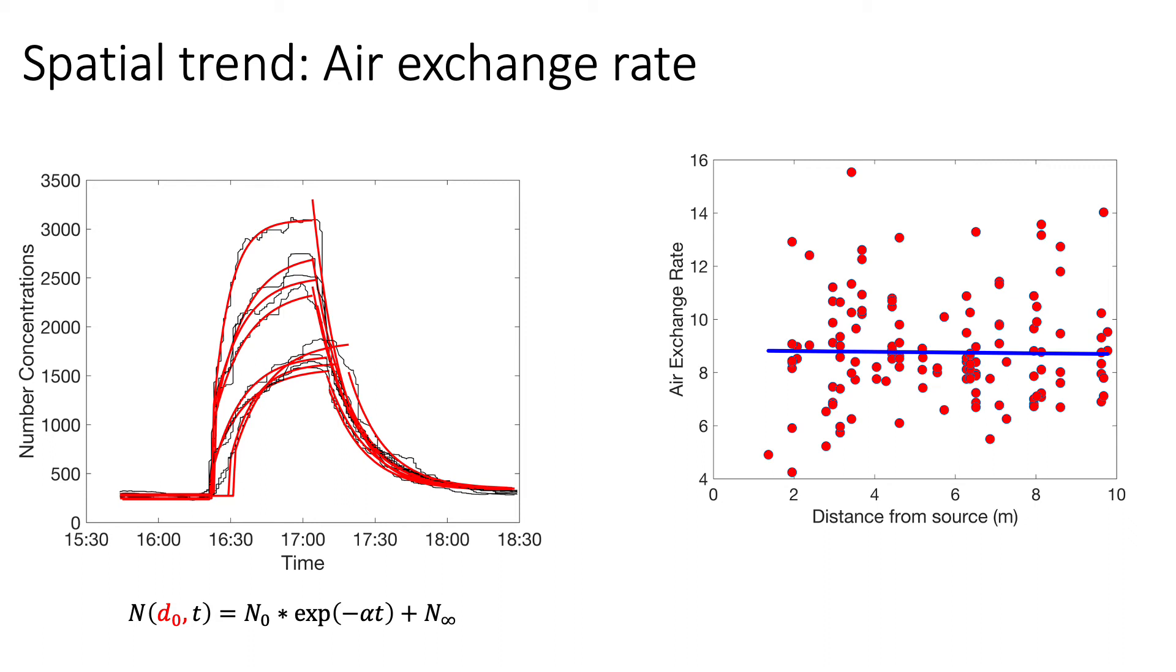What we found was that for sensors as a function of distance from the source, there's a lot of variability in what the air changes would be. But on average, we found that the air exchange rate was largely unchanged from the front of the room to the back of the room, at least for this one classroom. This suggests that the general behavior of a well-mixed room is somewhat applicable. Particles that are climbing up decay at the same rate throughout the room. But it's not entirely well-mixed. We can see very clearly the concentrations in one sensor are very different from one somewhere else.